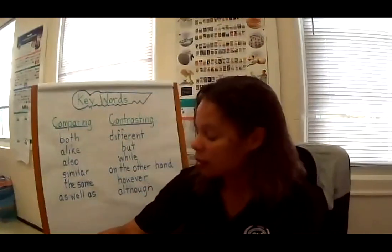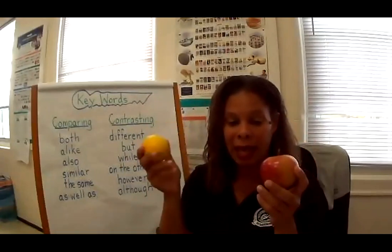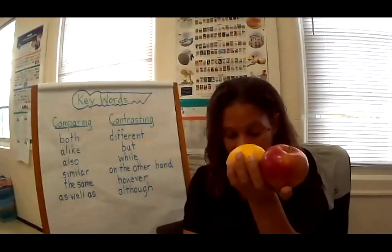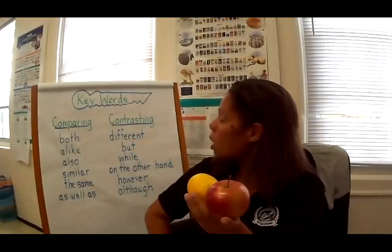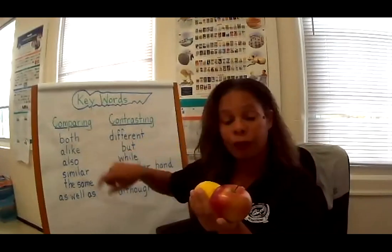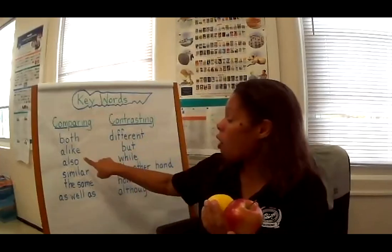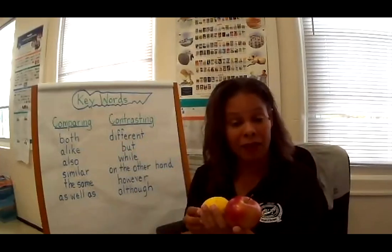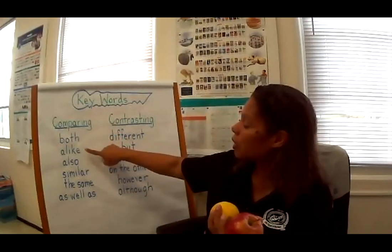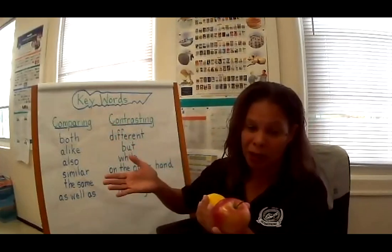I have two objects here — an apple and a lemon. Let's first compare the apple and the lemon. An apple and a lemon are both fruit, so they are alike because they're both fruit. They also both have seeds. Some words you can use to compare: 'both,' 'alike,' 'also,' 'similar,' 'the same as,' and 'as well as.' When you see those words, something's being compared.